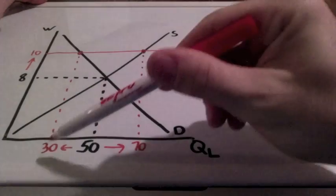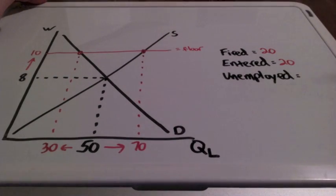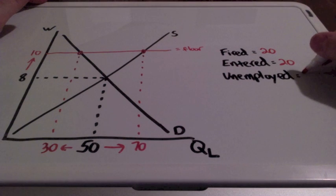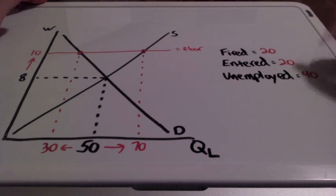So 50 minus 30 is 20 workers that were fired and 70 minus 50 equals 20 workers that entered into the industry, and that total number of unemployed workers is 40.